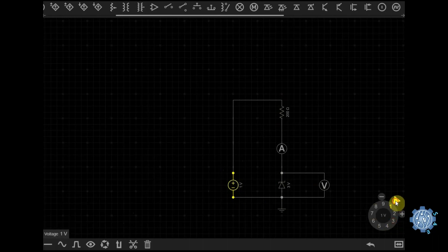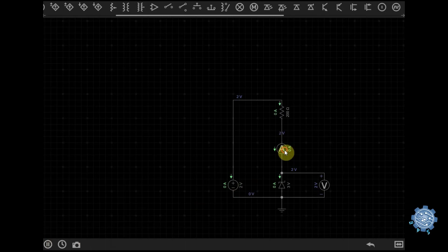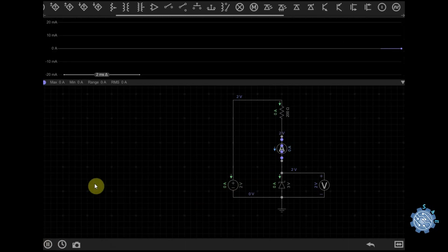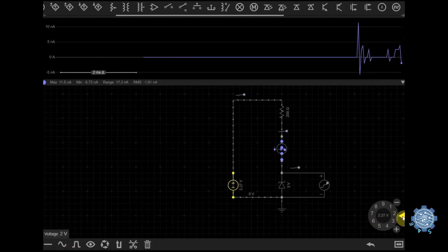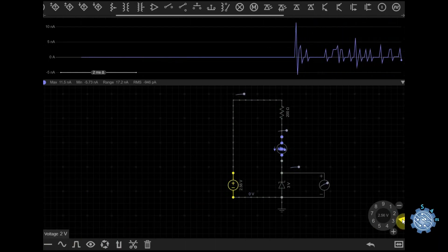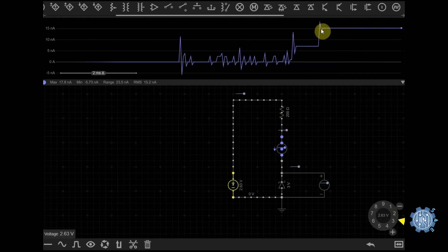In some applications the reverse leakage current can affect the overall performance of the circuit. For example in precision voltage reference circuits, the reverse leakage current can cause errors in the output voltage if it is too high. Therefore it's important to choose a Zener diode with low reverse leakage current to ensure accurate circuit performance.